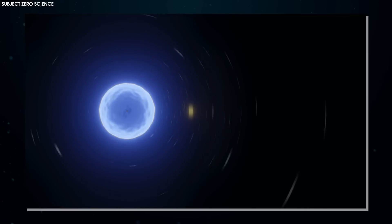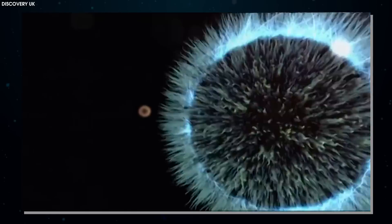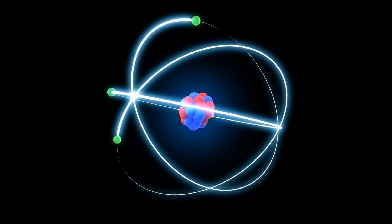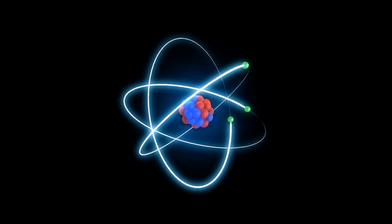However, matter and antimatter annihilate in a flash of energy when they meet, meaning these particles were constantly created and destroyed. But how did these particles come to exist in the first place?